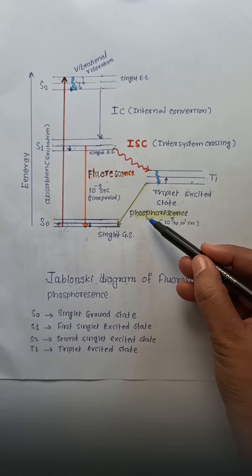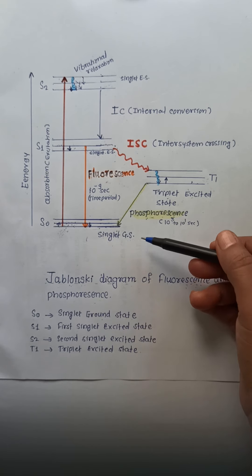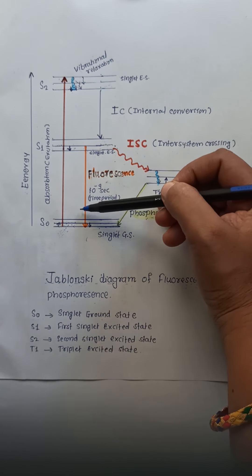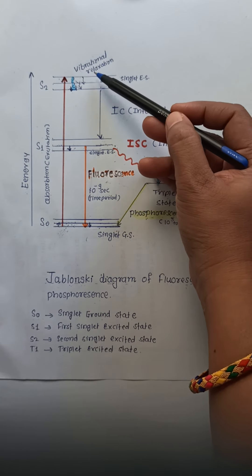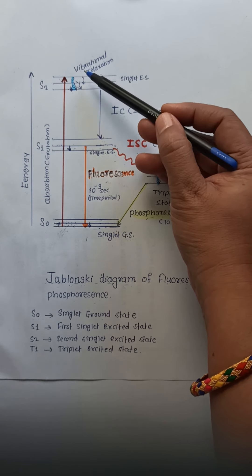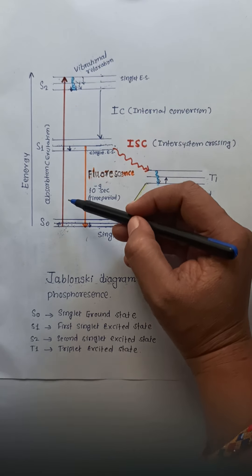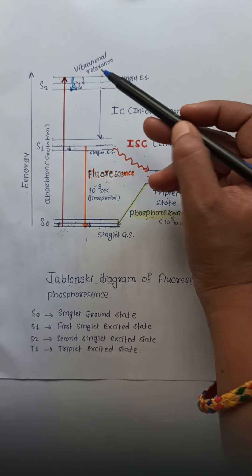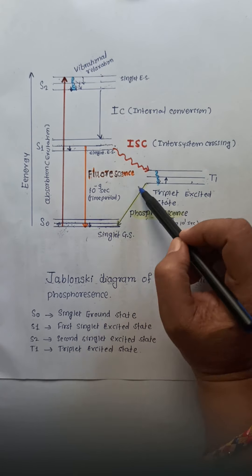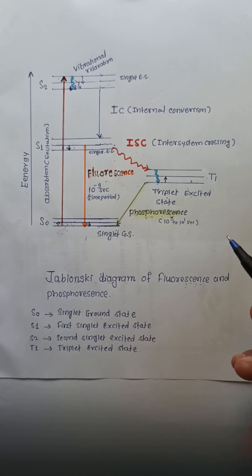In fluorescence, excitation happens through electromagnetic radiation. During the transition from the excited state to the ground state, energy is released to the surroundings by vibrational relaxation. The electrons can relax further due to additional vibrational relaxation until they reach the lower energy level of the S1 state. This covers all the pathways — vibrational relaxation, IC, fluorescence, and phosphorescence — in the Jablonski diagram.